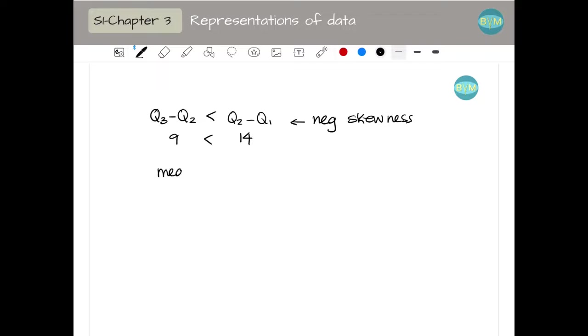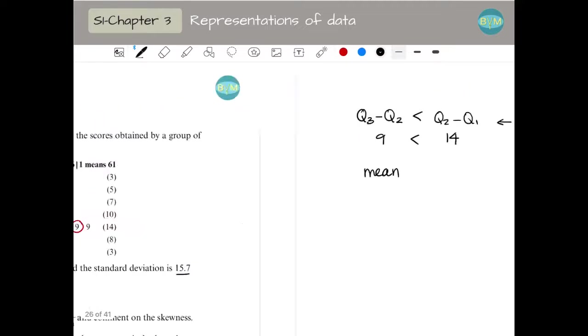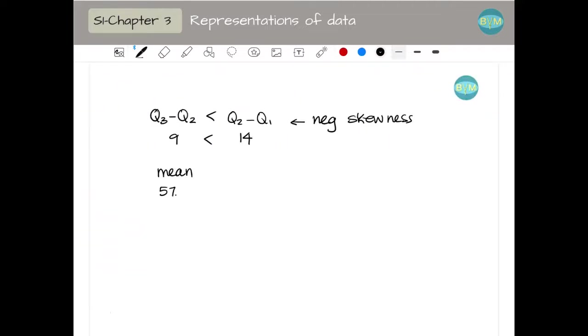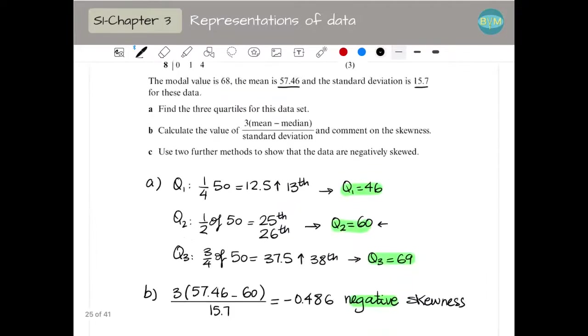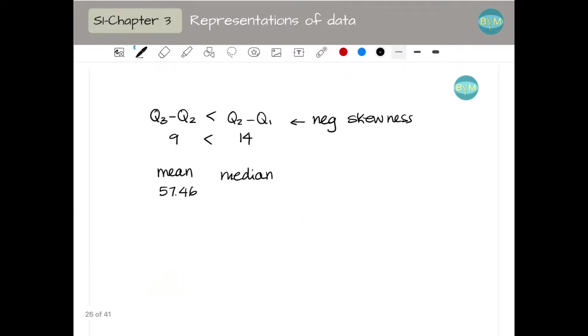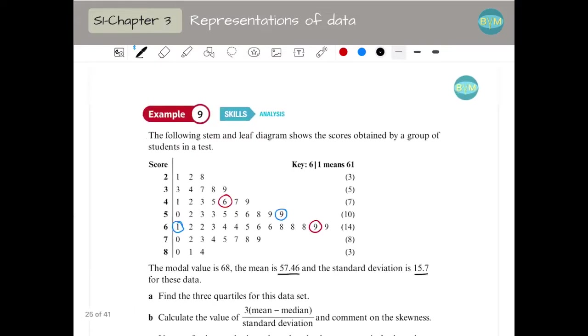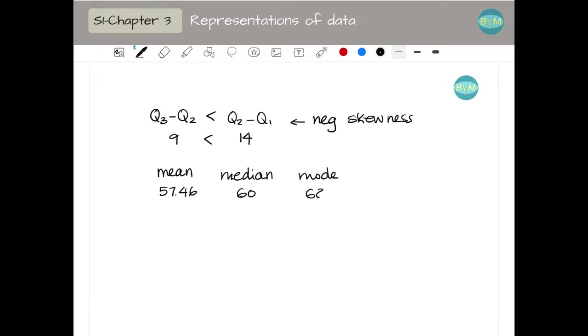And the other way of checking is comparing the mean, the median, and the mode. So the mean was 57.46, it was given. The median is Q2, we found it here, and it's 60. And the mode was given as 68. So that means the mode is greater than the median, and the median is greater than the mean, which means, as we expected, negative skewness.